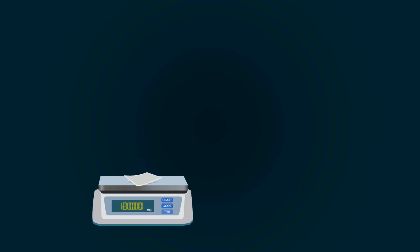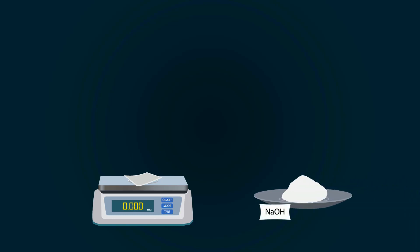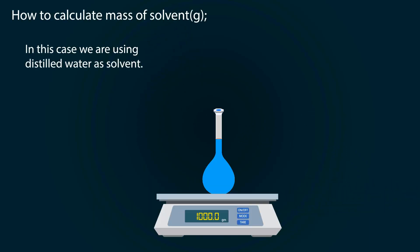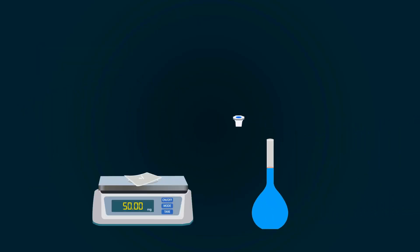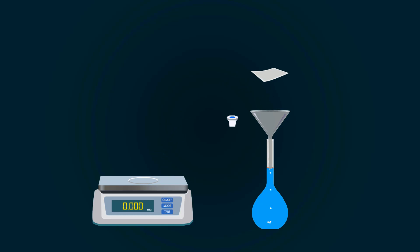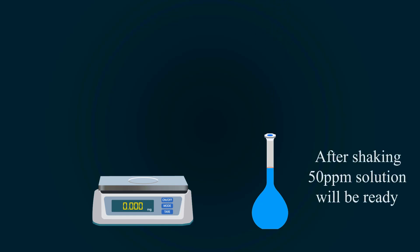Let's start the preparation. Take a weight balance and power it on. Put weighing paper on it and tare it down. Start adding solute into the weighing paper with the help of a spatula. Measure the solute up to 50 milligrams. Now add this 50 milligrams of solute into the distilled water in the volumetric flask using a funnel. After adding the solute, shake the volumetric flask and you will get a 50 ppm solution.